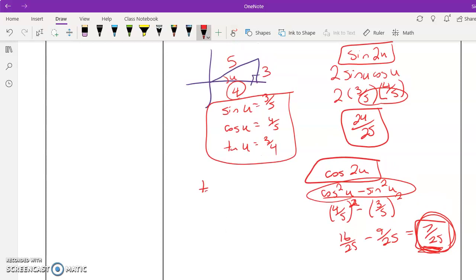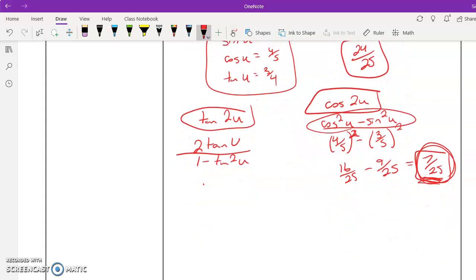Okay, and then finally, tangent of 2u, I'm just going to plug it into the formula. And then I'm going to substitute - let's see, what was tangent? 3 fourths. So this is 6 fourths, which is 3 halves, and this is 1 minus 9 sixteenths. I don't like this. So 16 minus 9 is 7 over 16, 3 halves. So I think what I'm going to do is take this divided by this.